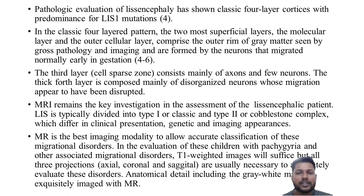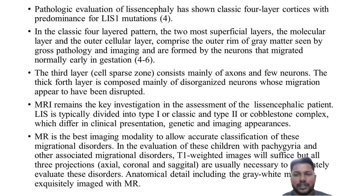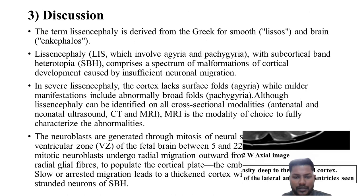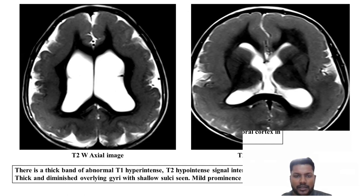Pathologic evaluation of lissencephaly has shown classic four-layer cortices with predominance of LIS1 mutations. In the classic four-layer pattern, the two most superficial layers — the molecular layer and the outer cellular layer — comprise the outer rim of gray matter, formed by neurons that migrated normally early in gestation. The third layer, a cell-sparse layer, consists mainly of axons and few neurons. The thick fourth layer is composed mainly of disorganized neurons whose migration appears to have been disrupted, as seen in this schematic thick fourth layer.